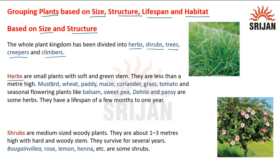Herbs are small plants with soft and green stems. They are less than a meter high. Mustard, wheat, paddy, maize, coriander, grass, tomato, and seasonal flower plants like balsam, sweet pea, dahlia, and pansy are some examples. They have a lifespan of a few months to one year.